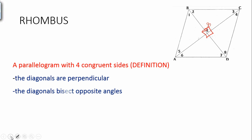And we also have diagonals that bisect opposite angles. So that means in this diagram, angle 1 would be congruent to angle 2. Angle 7 would be congruent to angle 8. Angle 5 would be congruent to angle 6, and so on.